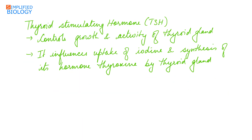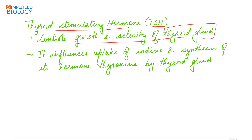Thyroid stimulating hormone (TSH) controls the growth and activity of the thyroid gland. It influences the uptake of iodine and the synthesis of thyroid hormones like thyroxin by the thyroid gland.